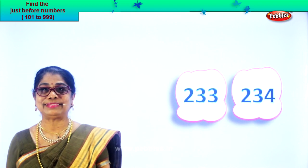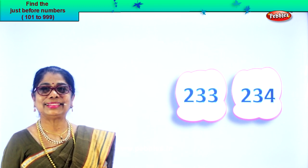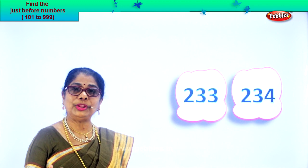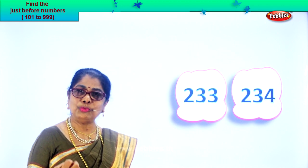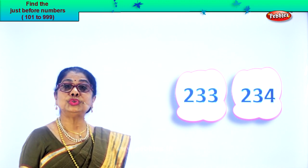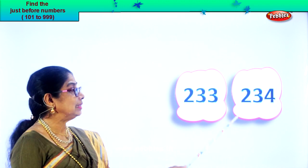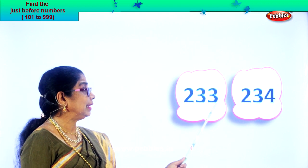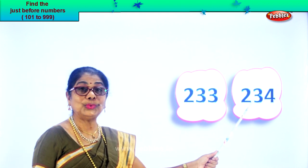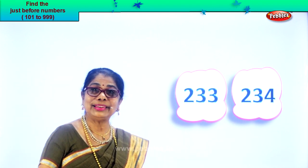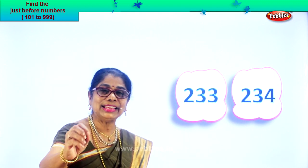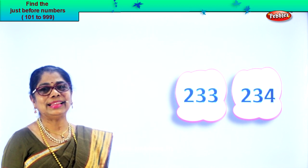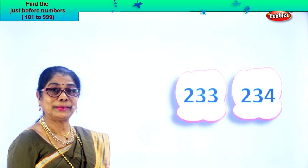Very good. That's how you identify when there is more than two numbers. When there are three numbers, you have 233, 234. Did you enjoy that very interesting exercise? Let's take the next number.